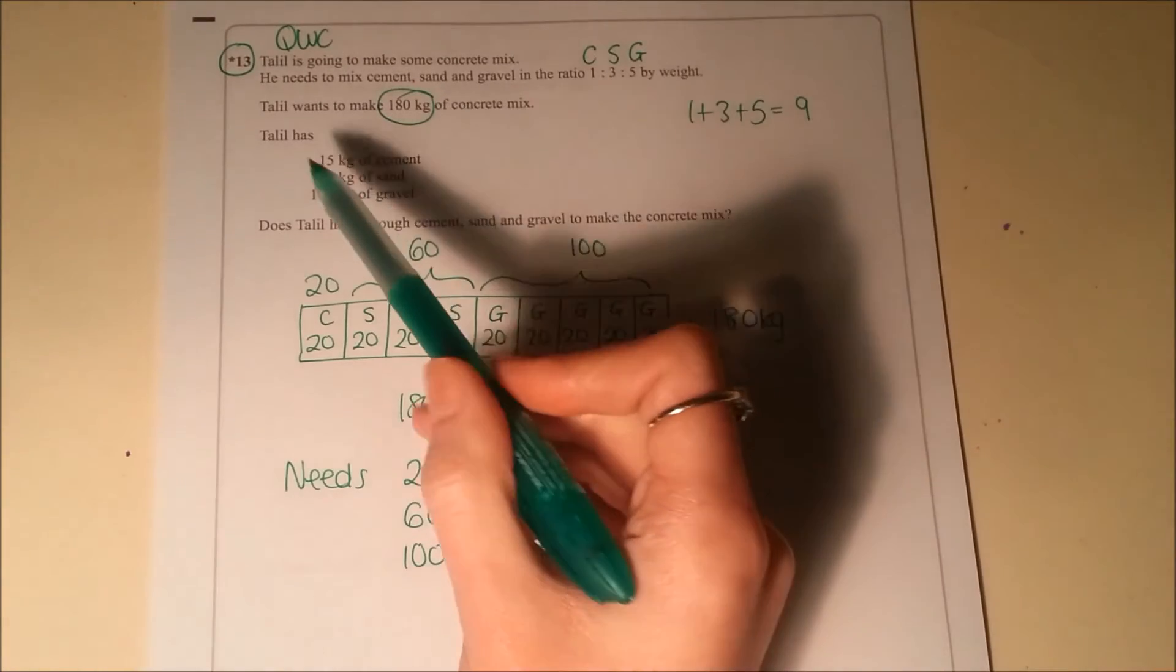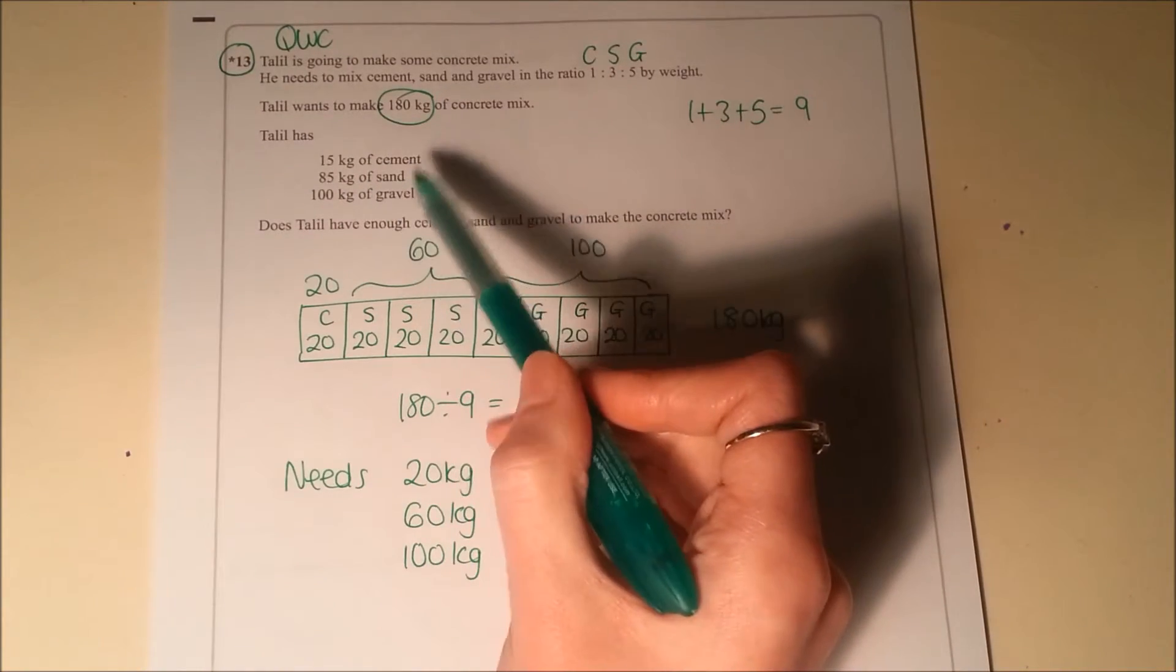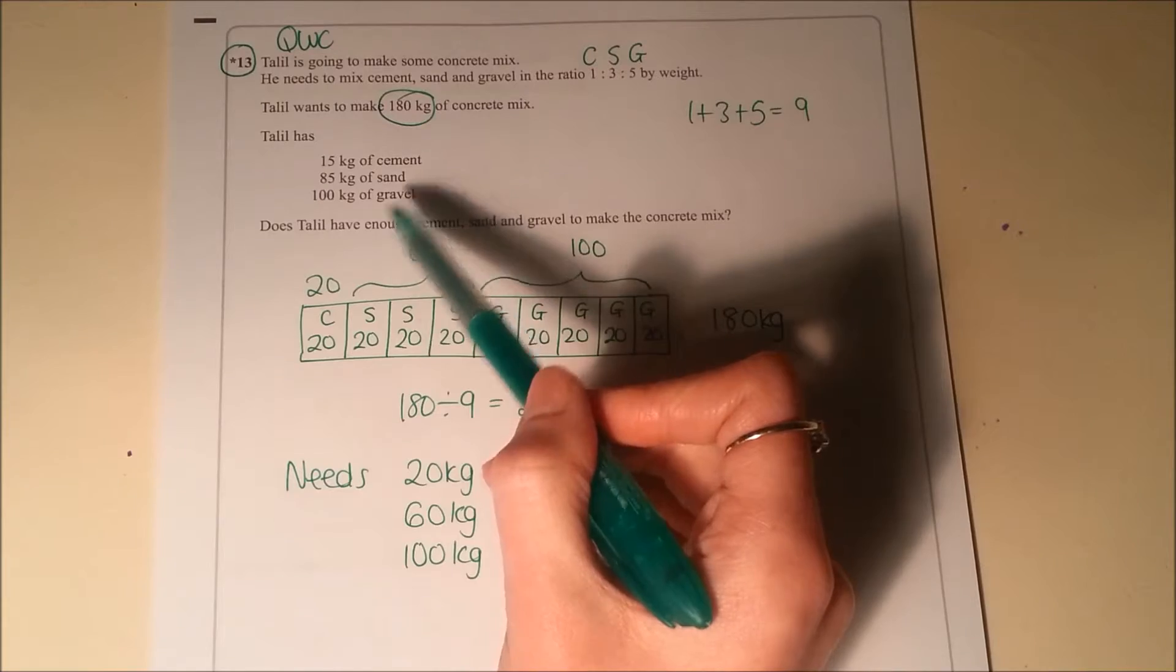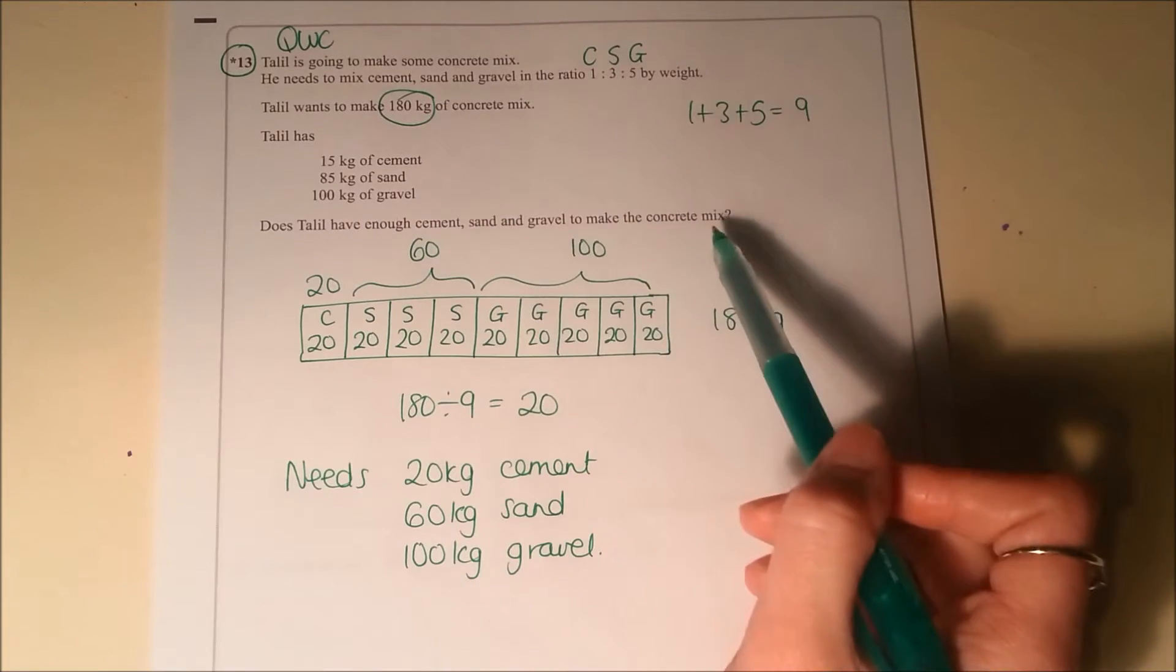Then we'll re-read the next bit of the question. He has 15 kilograms of cement, 85 of sand and 100 of gravel. Does he have enough cement, sand and gravel to make the concrete mix?